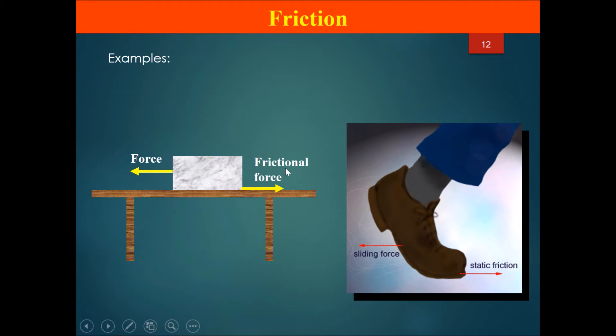However, the frictional force only acts when there is contact between the surfaces, and therefore the arrow has to be between the block and the wooden table. It's drawn like this with an arrow head over here.